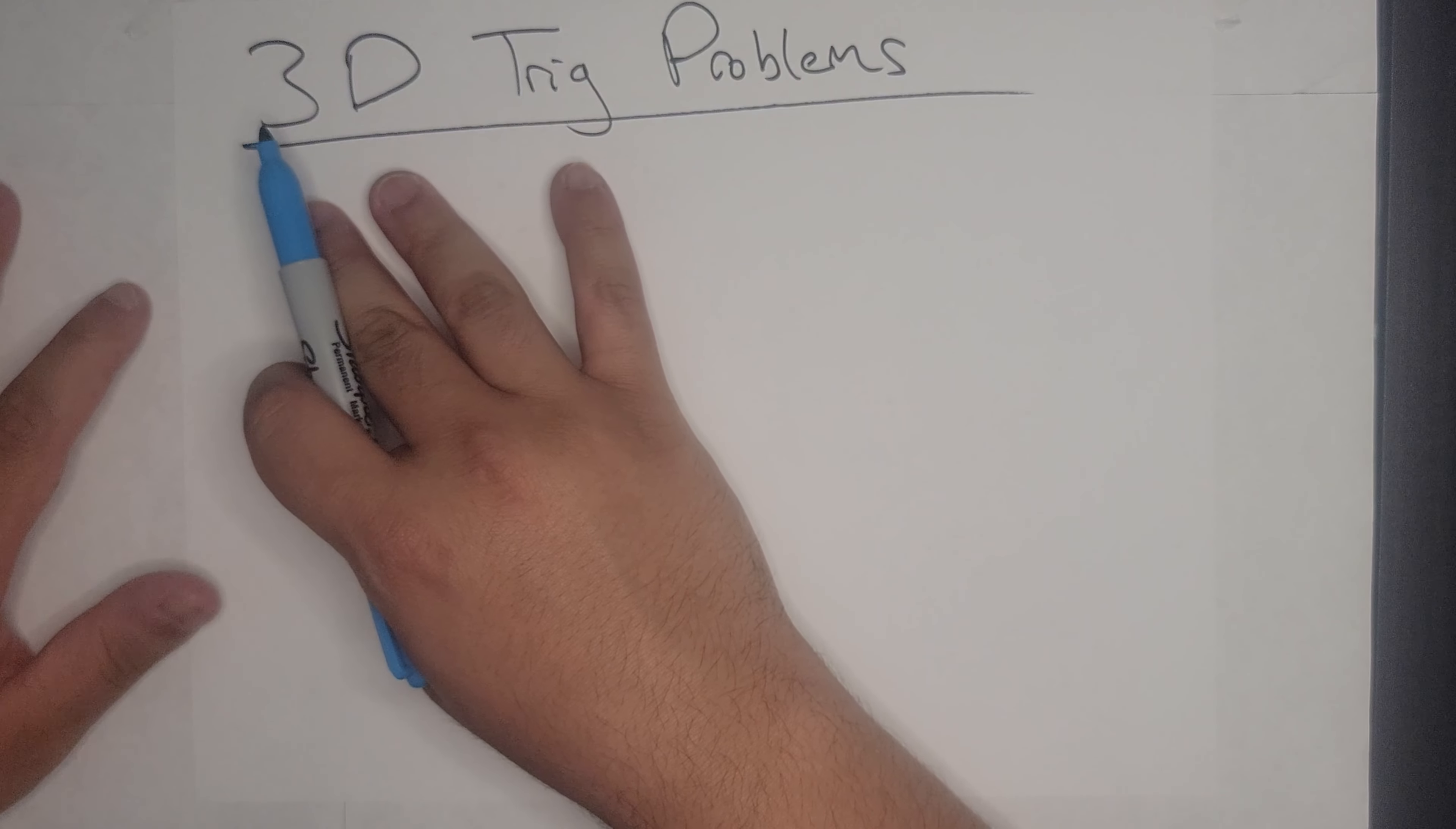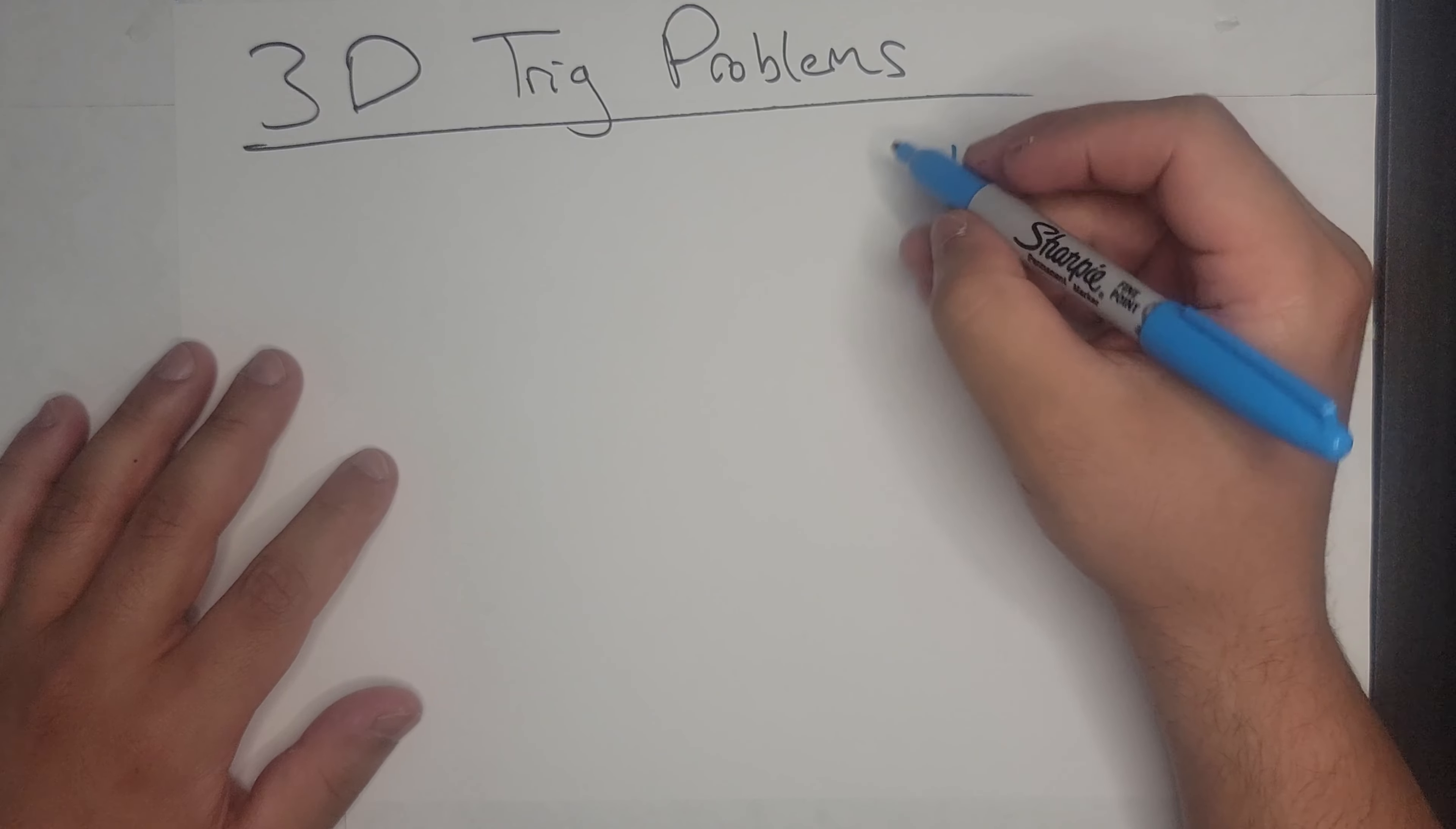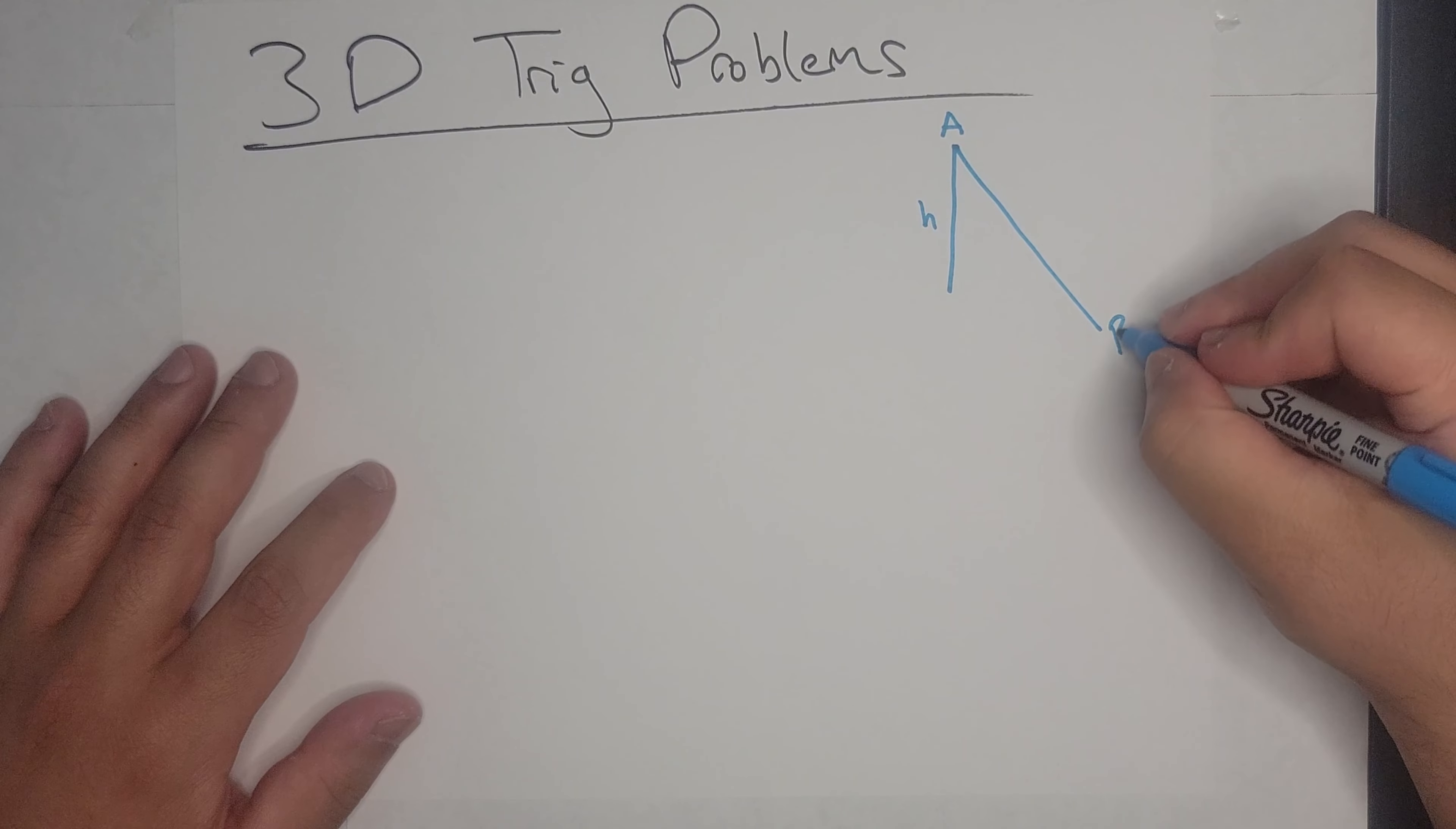Okay, so in this video we're going to be tackling 3D problems, three-dimensional problems involving trigonometry. So let's say we have a cliff, say this is the cliff and this is the height up, call it h. And I'll call this point A, and then I have this point here I'm gonna call it B.